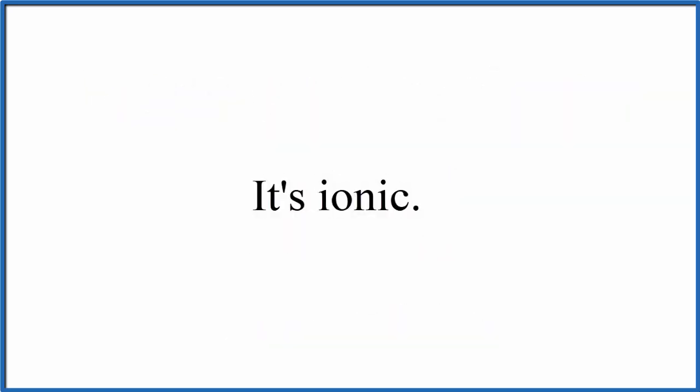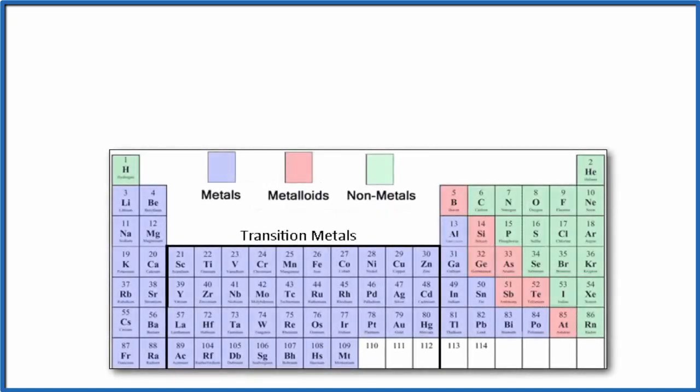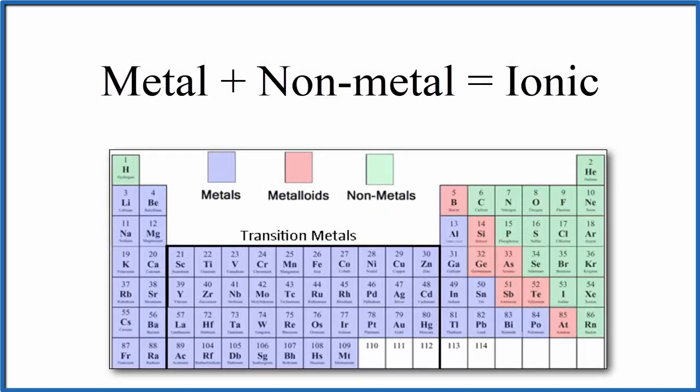There's two ways that we can figure this out. First, we look at the periodic table. We know that a metal and a non-metal forms an ionic bond.